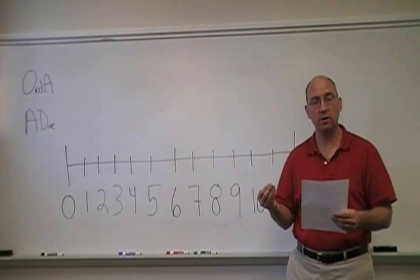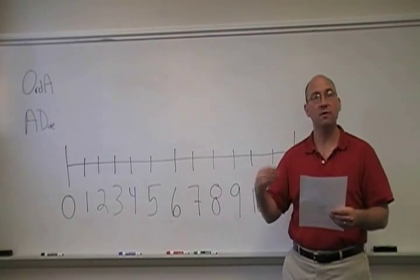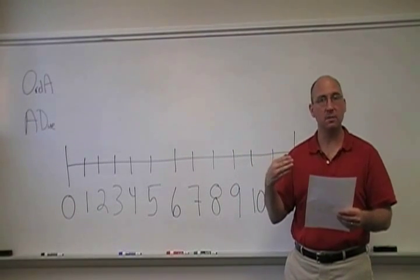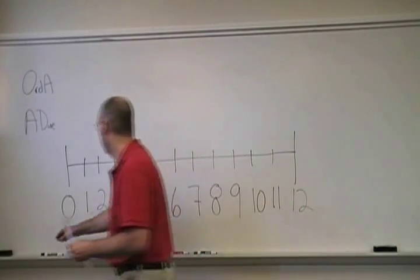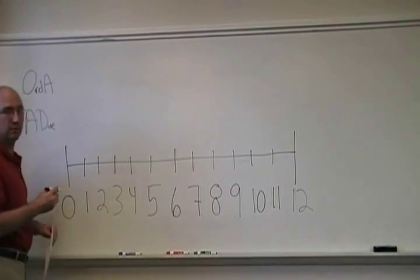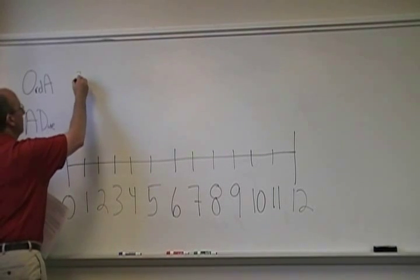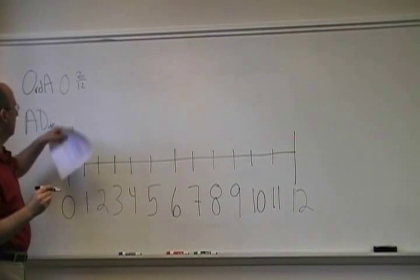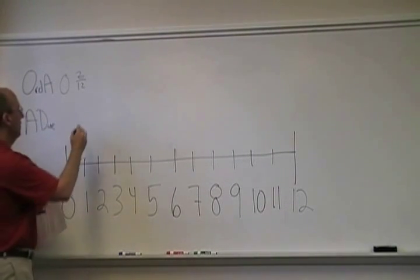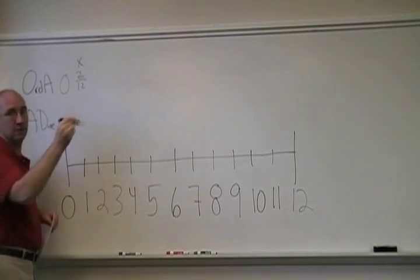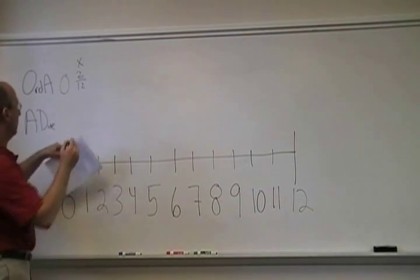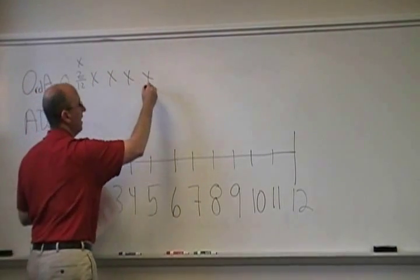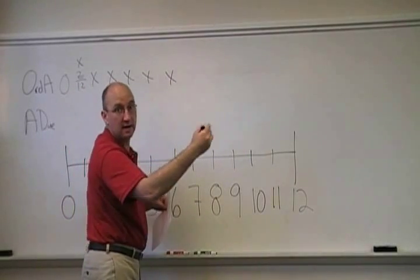With an ordinary annuity, he'll get a payment every month — in this case for 12 months — but the payments come at the end of the month. Alternatively, the first payment is one month from today. So he would get nothing today, and then Z over 12 — I'll just call that X, because it's a lot easier to draw X's — he'll get X in months 1, 2, 3, 4, 5, 6, 7, 8, 9, 10, 11, and 12.